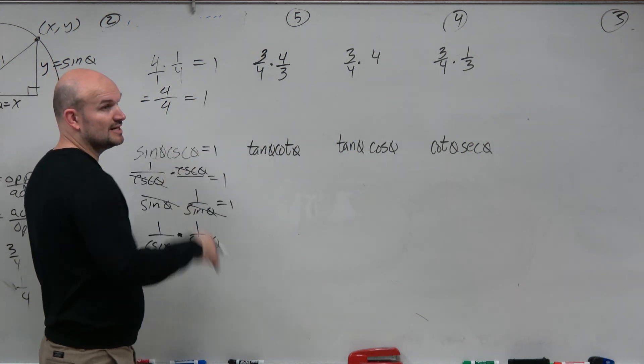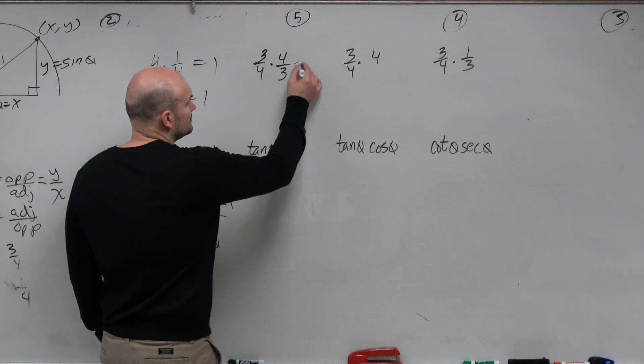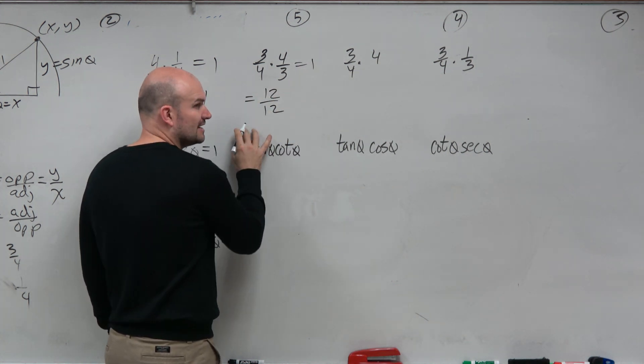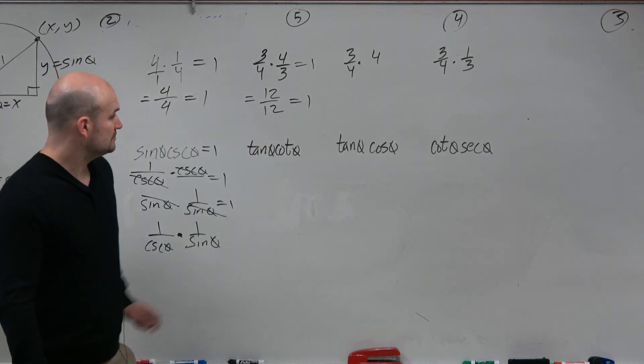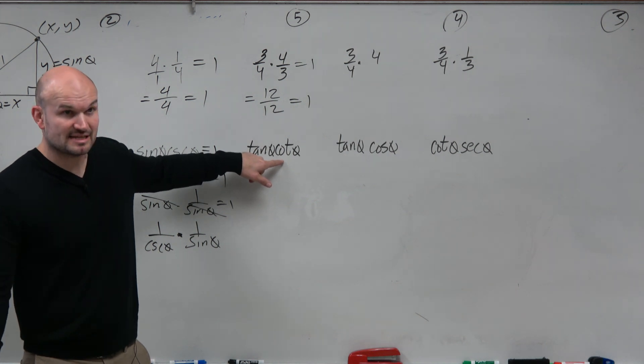So over here, do you guys recognize a fraction multiplied by its reciprocal? It's 1. Yeah, it's 1. But if you're like, eh, I'm not really sure, could you also just divide and then say, oh, it's equal to 1? Right? Now, I could rewrite these as 1 over cotangent or I write this as 1 over tangent and I'd get the same answer. Right?